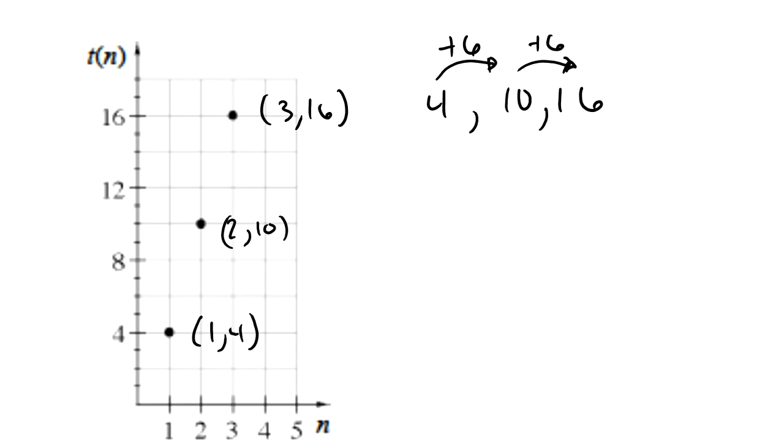And I could figure out the 0 term pretty simply, right? My first term is 4, and I'm adding 6 to move forward. So if I subtract 6 from that first term, it would give me negative 2. So I now know the 0 term.